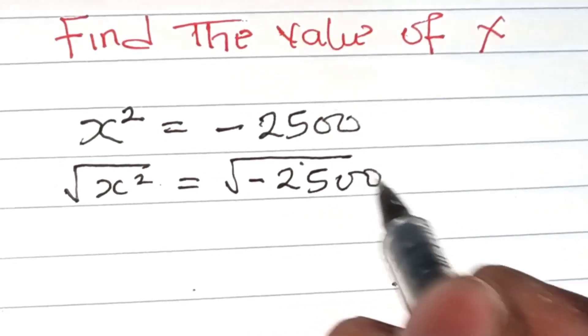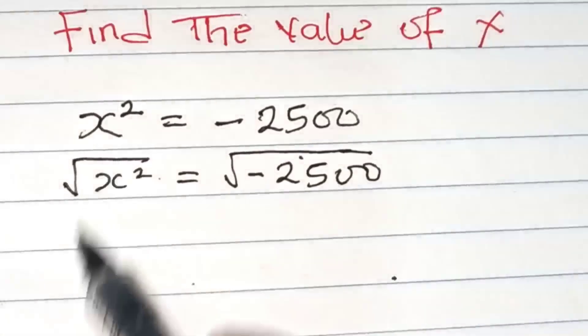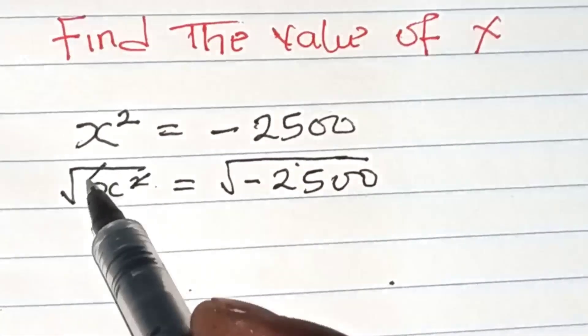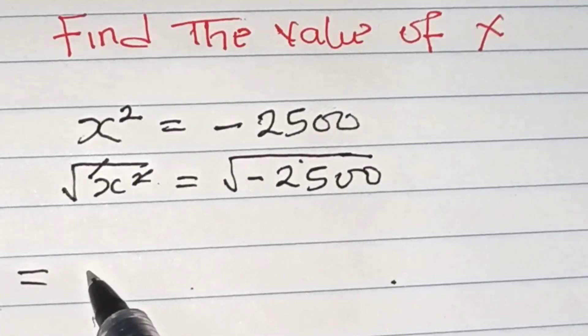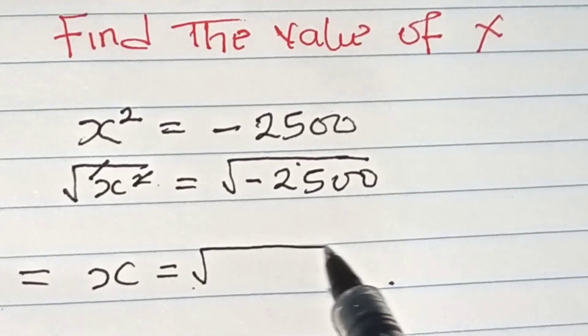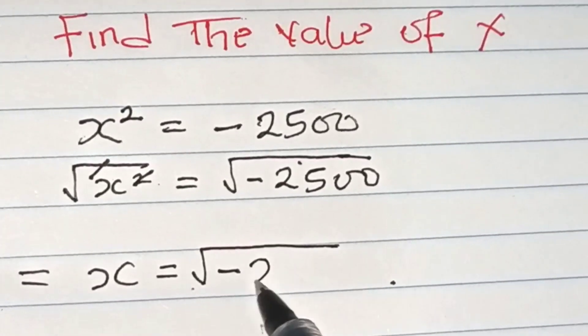Actually, you know that square root and squared cancel each other, right? So we have X equals square root of minus 2500.